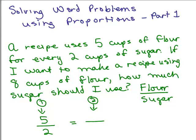Now I want to make a recipe using eight cups of flour. So flour goes in the numerator, and what I don't know is the sugar. How about we let the amount of sugar I need be x. So x is the amount of sugar that I want.